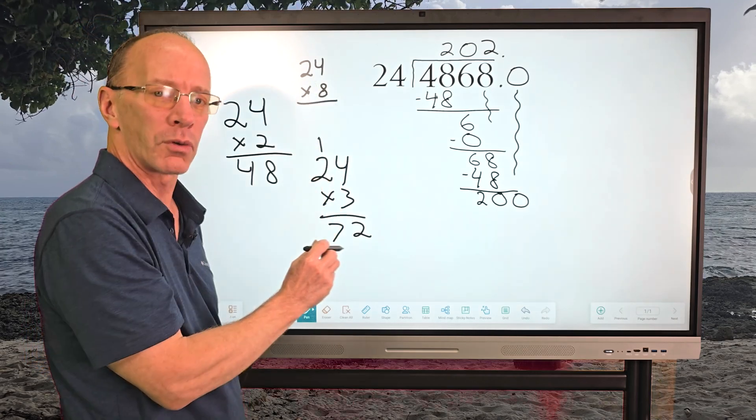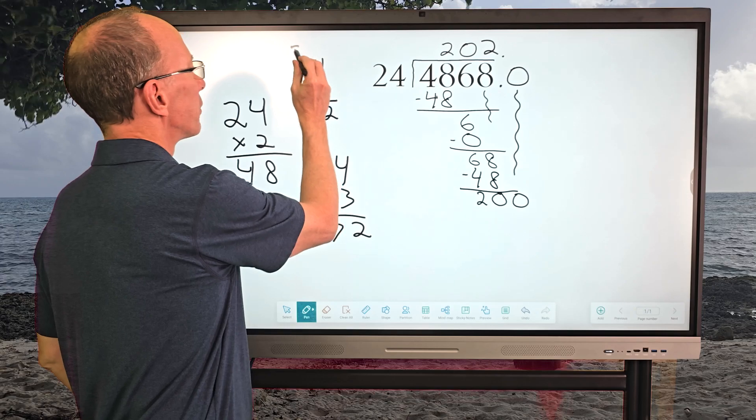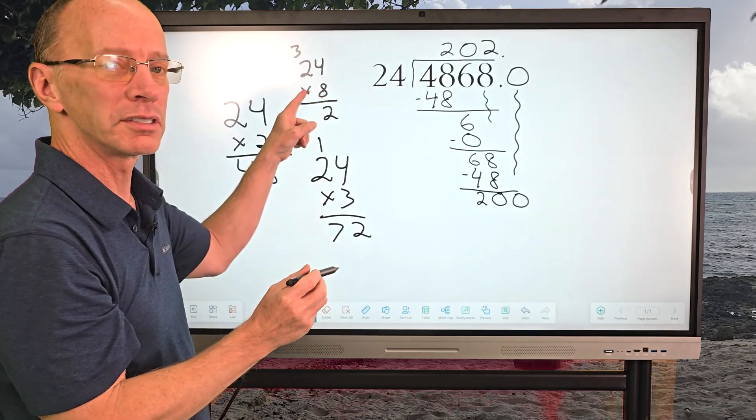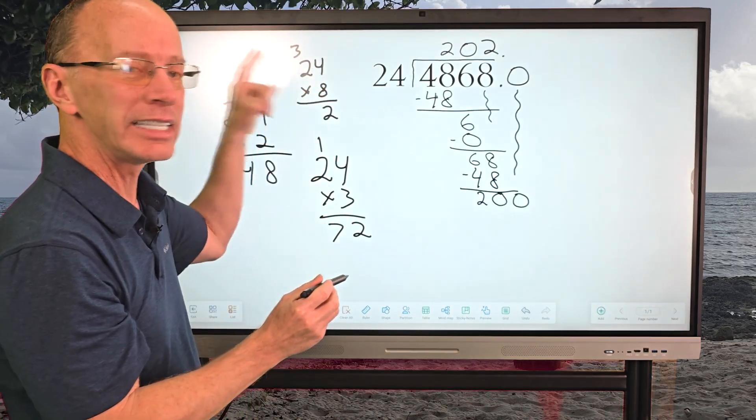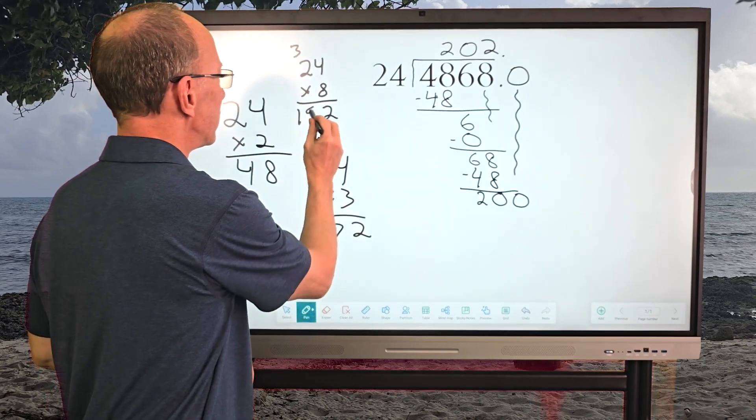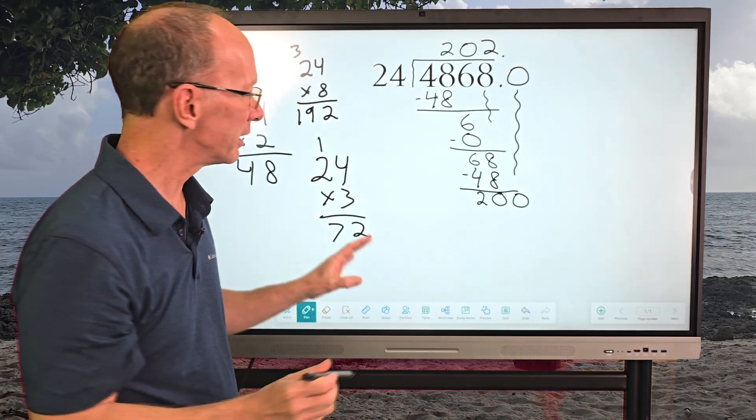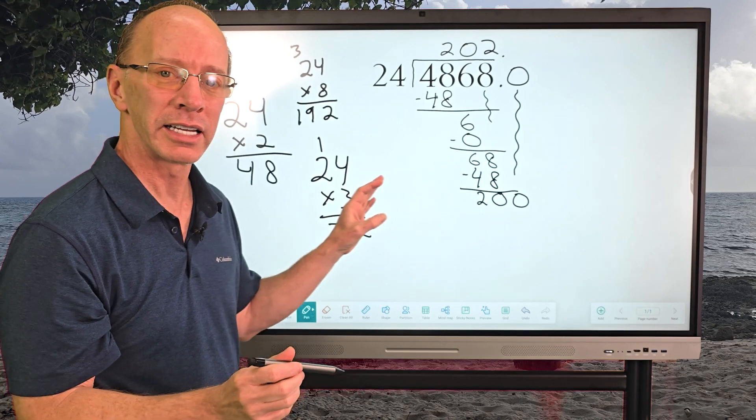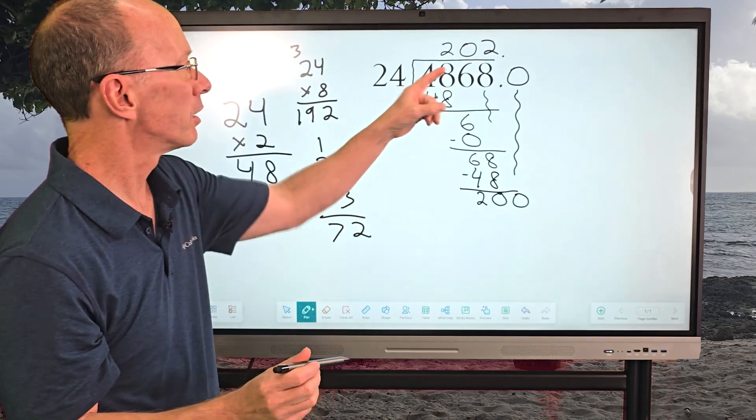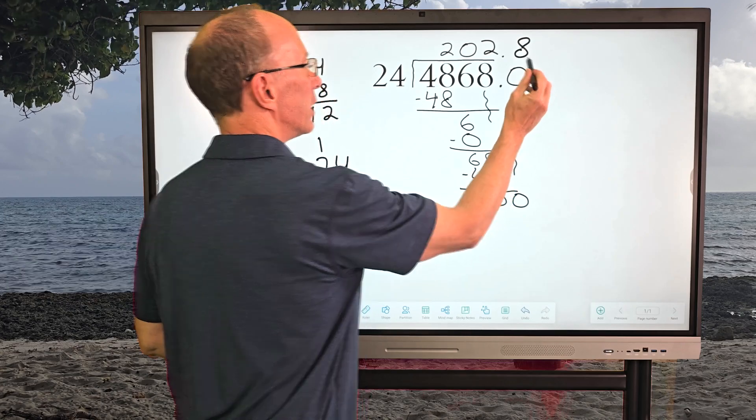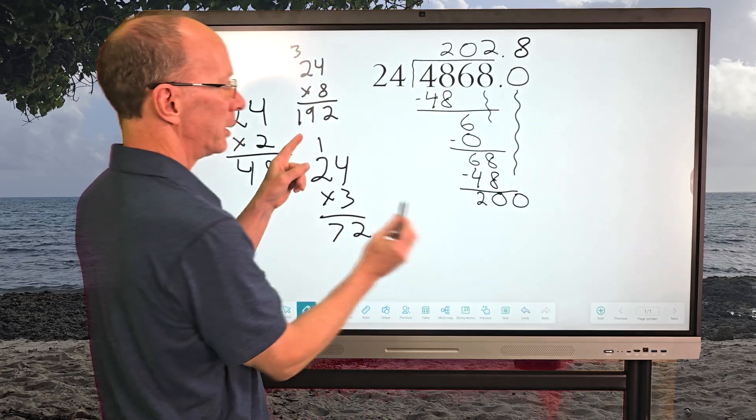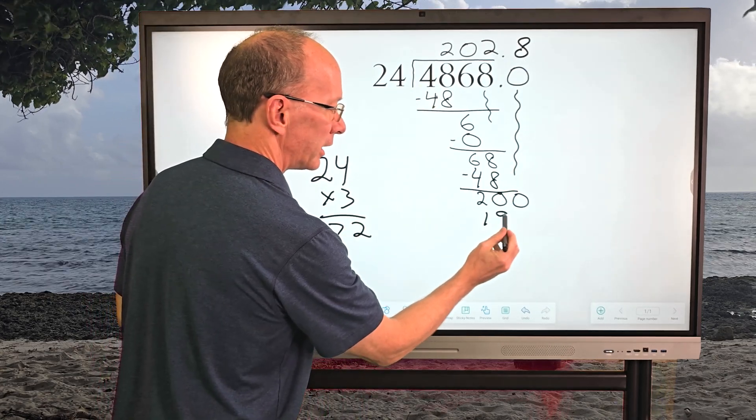And then 8 times 4 is 32. So we'll put 2 here and 3 here. And then 8 times 2 is 16, 17, 18, and 19. And I think I don't think I can go any more with there. So I'm going to put 8 right here.